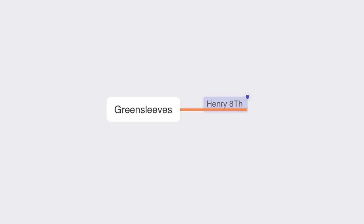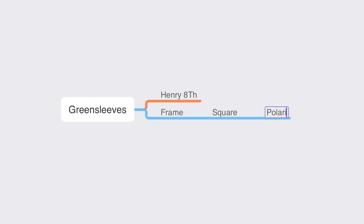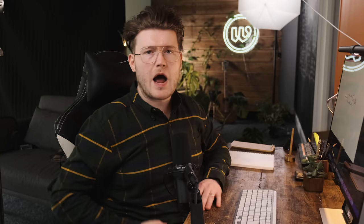The first thing I write down is the company name, Greensleeves, just to have it in there. Now what I'm going to be doing is creating connections for this. So obviously we've got like Henry VIII — frame, square, Polaroid, vintage. So I'm thinking when I'm creating this: vintage because it's Henry VIII, Greensleeves, we've got those real ornate looks. So ornate, Victorian, swirls, flourishes.